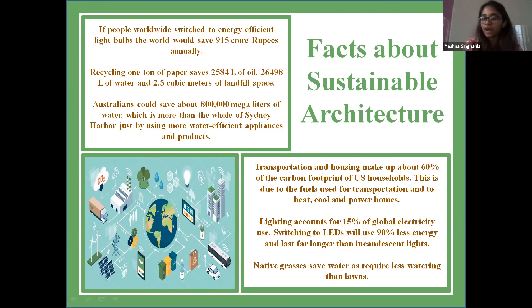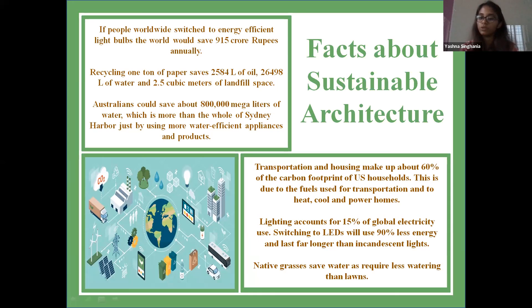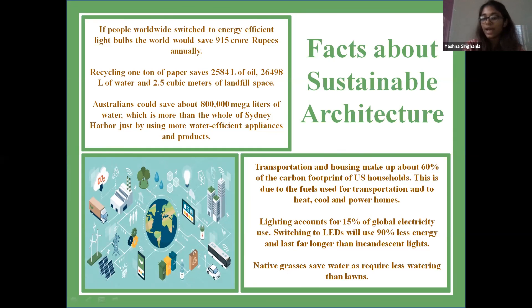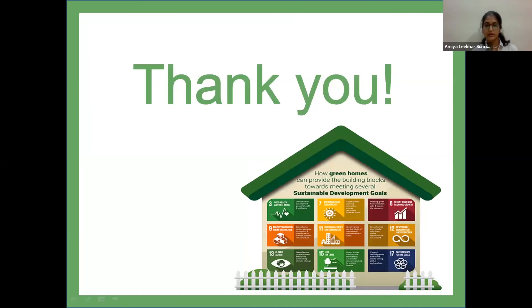Transportation and housing make up 60 percent of the carbon footprint of US households, due to fuels used for transportation and to heat, cool, and power homes. Lighting accounts for 15 percent of global electricity use — switching to LEDs would use 90 percent less energy and last far longer than incandescent lights. Native grasses save water as they require less irrigation. With this, we conclude our presentation: one small step from our side could make a global impact and save the earth — because we only have one earth.